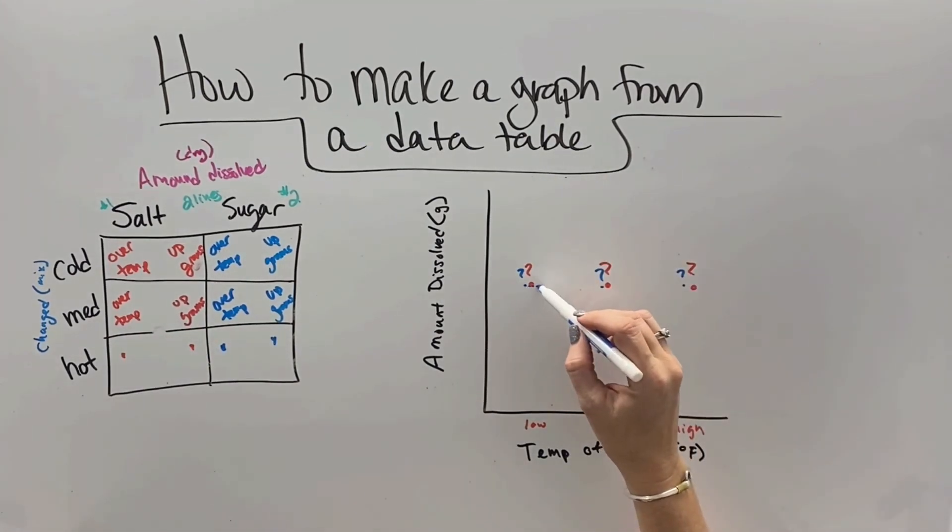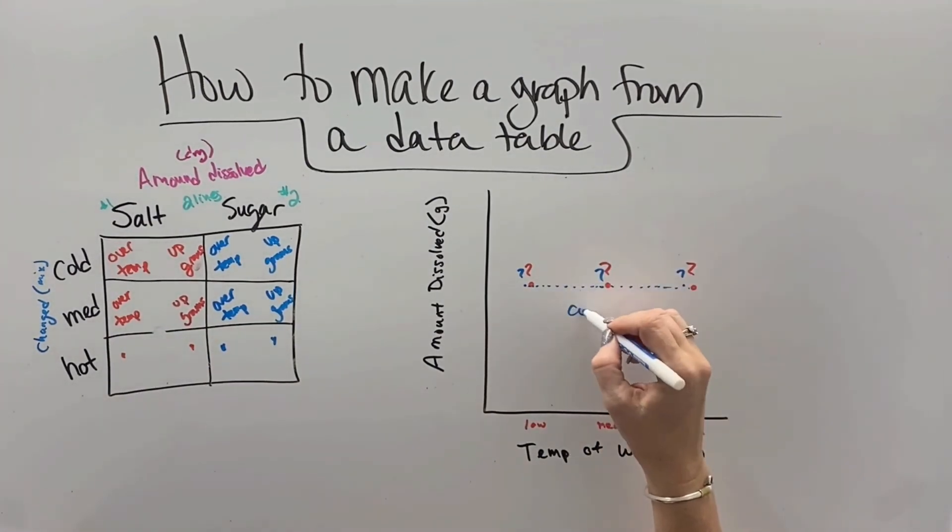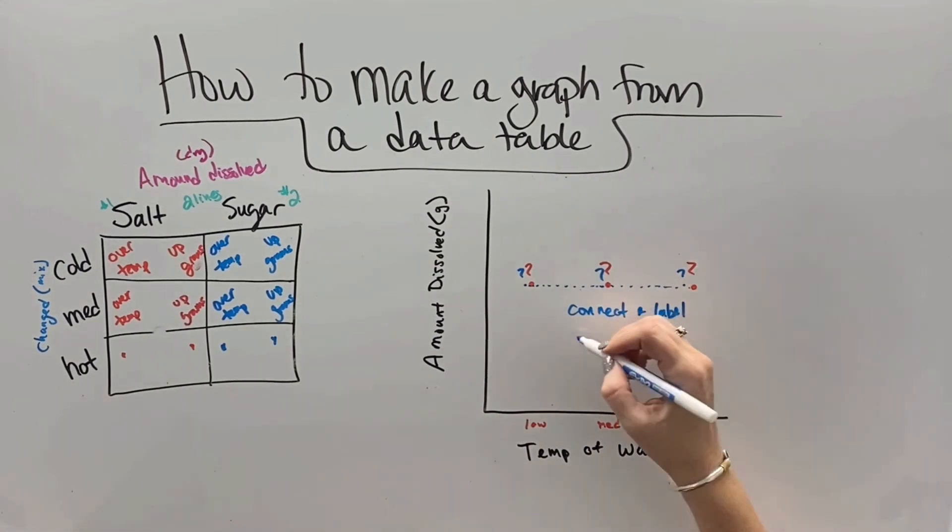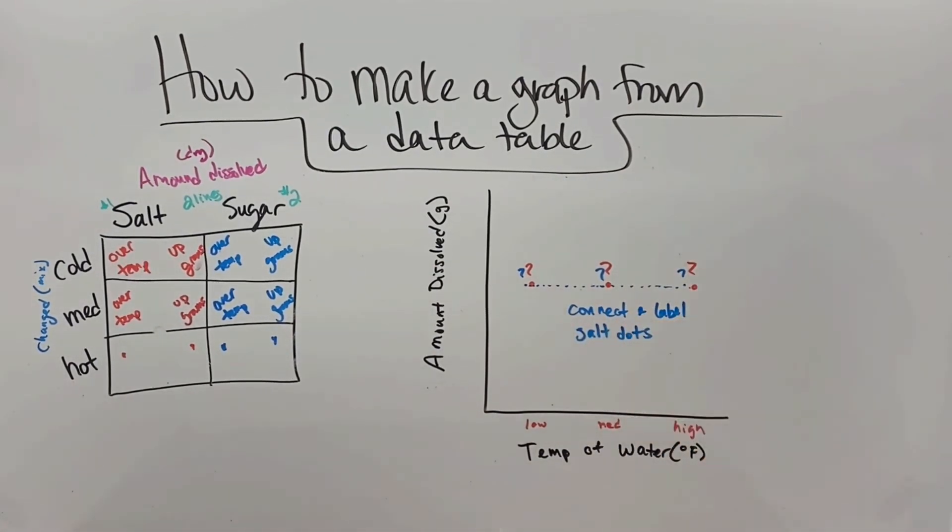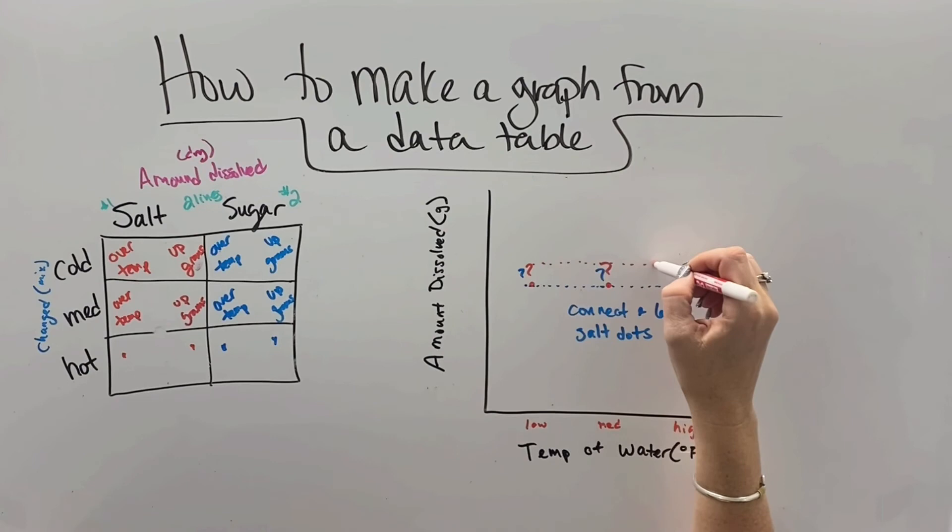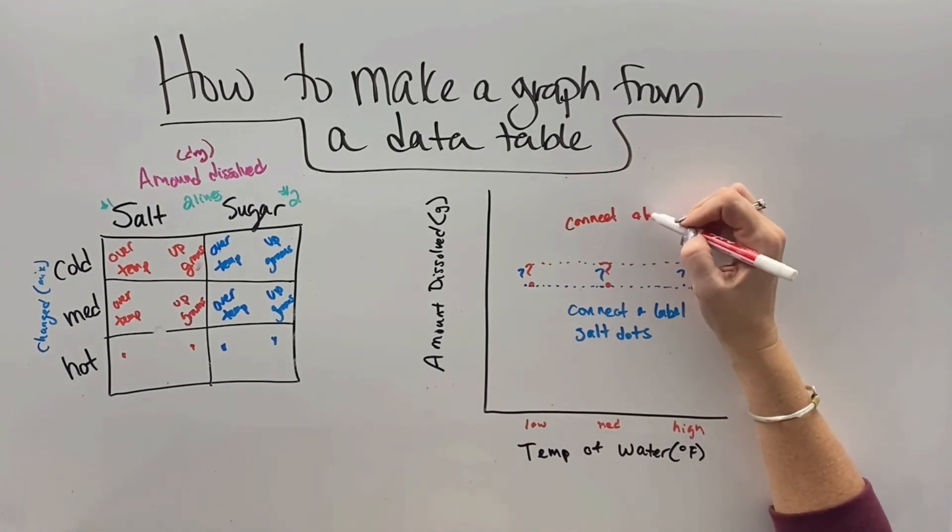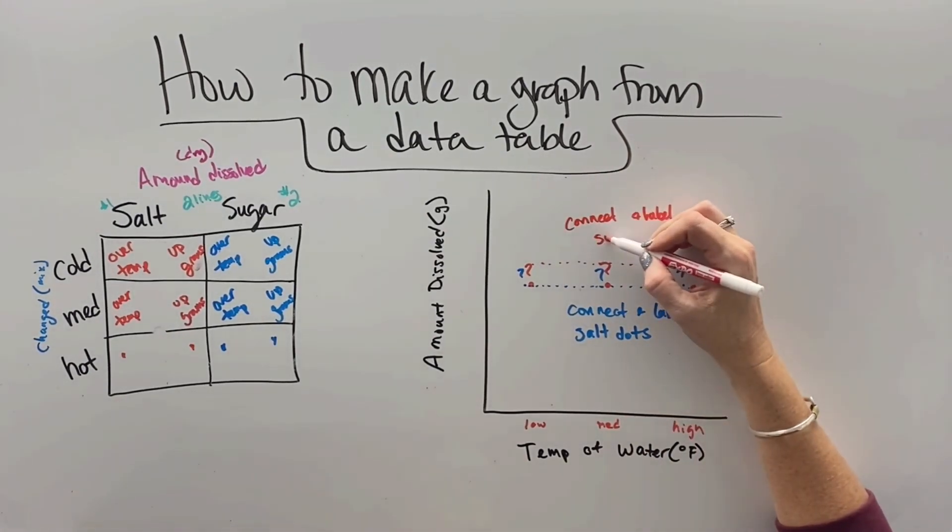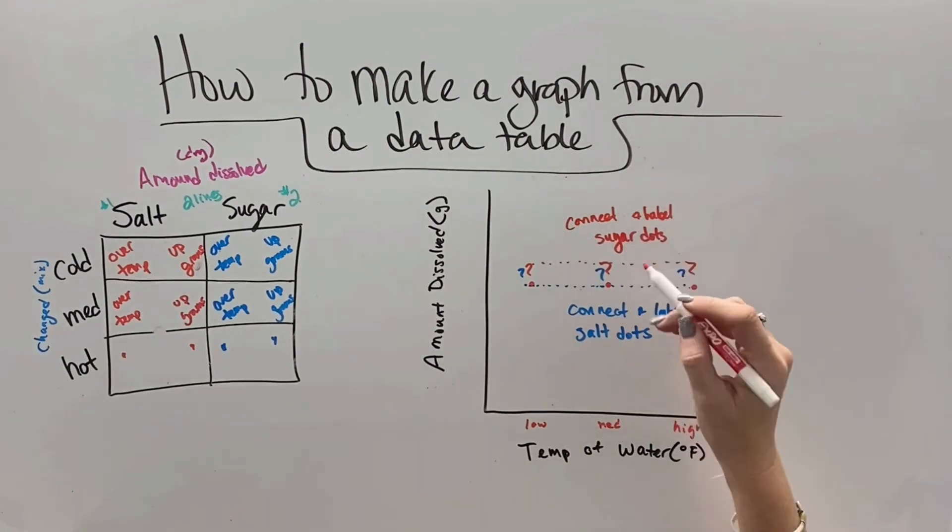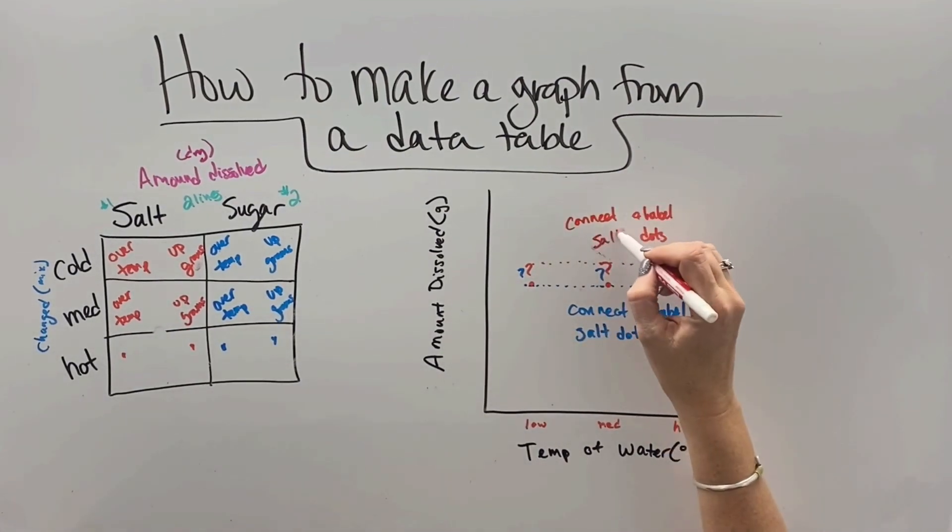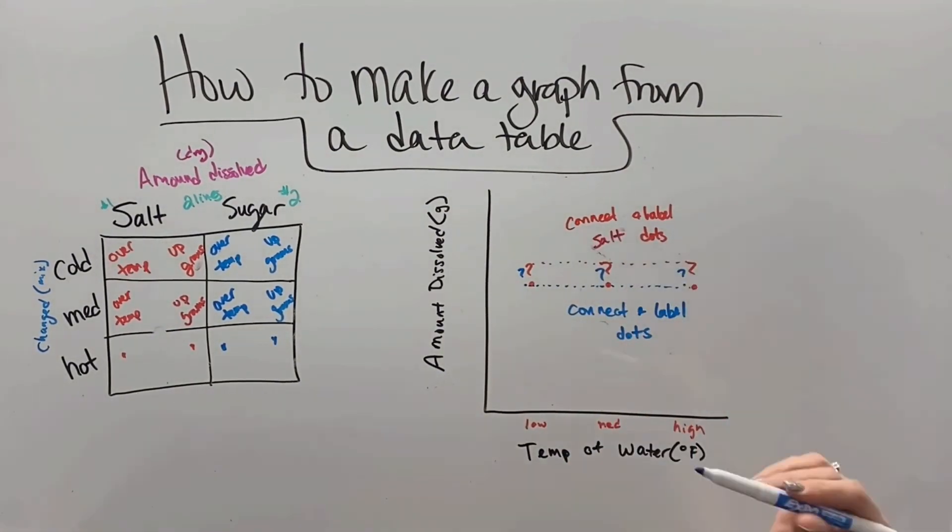Now you're going to have your increments settle out based on the information that you grabbed from the lab. But then you're going to connect those dots and label them as salt and sugar. And this is going to give you a really clear picture on the pattern that happened in our experiment of the effect of temperature on the solubility of salt and sugar.